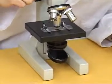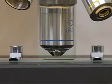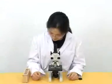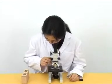Look at the stage from one side and lower the body tube again until the objective almost touches the slide. Look through the eyepiece and try to observe.